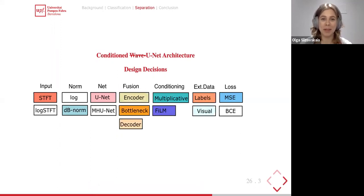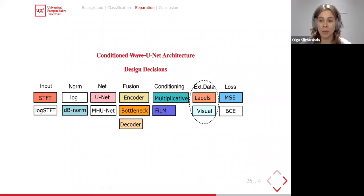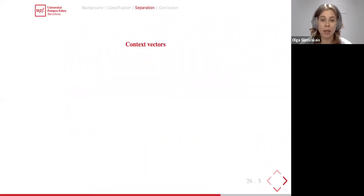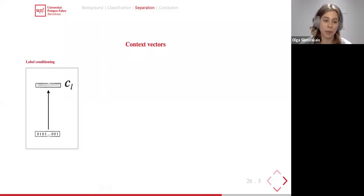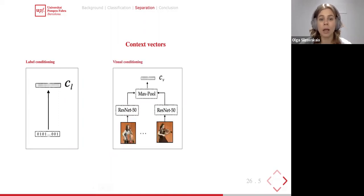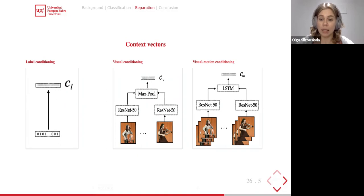Finally, we are able to experiment with multimodal architectures using both label conditioning and visual conditioning. For the external data, we use binary and visual context features. For binary vectors, we use one-hot encodings. For pure visual conditioning, we take frames from the individual performances, process them with a ResNet-50 architecture, and apply max pooling to obtain the visual conditioning vector. For visual motion conditioning, the first stage is the same — processed with ResNet-50 — and then passed through a smaller LSTM network to obtain the visual motion conditioning vector.